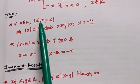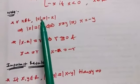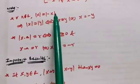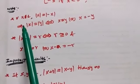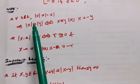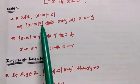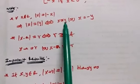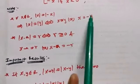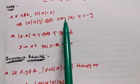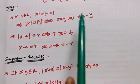X is a real number. Modulus of X is equal to modulus of minus X. Which implies modulus of X is equal to modulus of Y if and only if X is equal to Y or X is equal to minus Y.